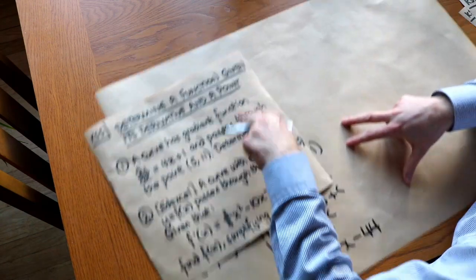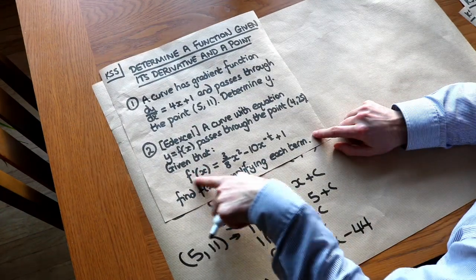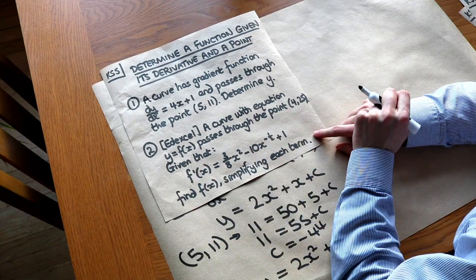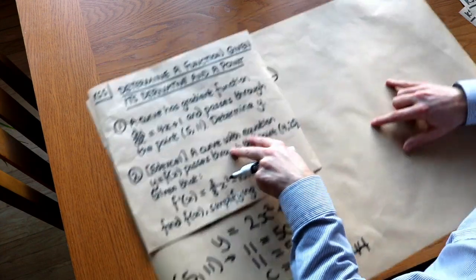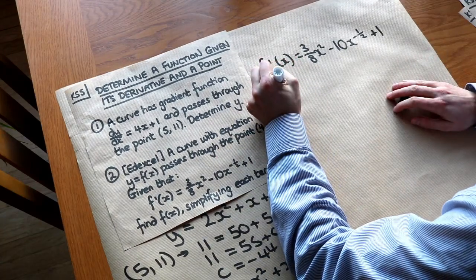What about this second, slightly harder one? So the curve has this gradient function, f'(x). That's another way of writing dy/dx in a kind of functional form. So let's just copy that out. So let's first integrate it to find the original function.